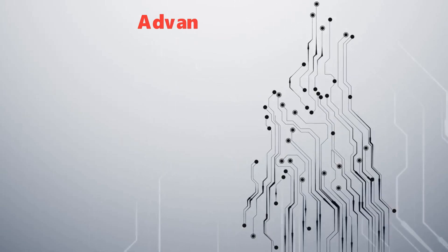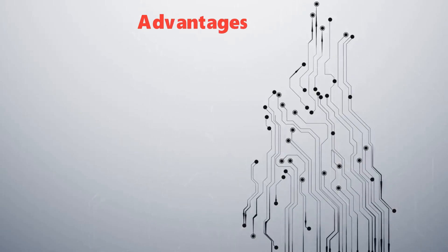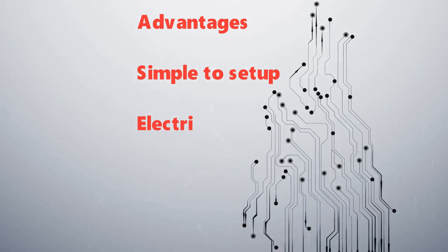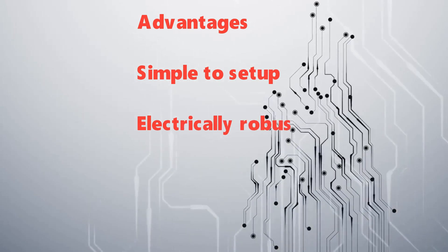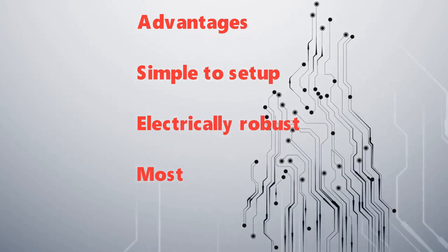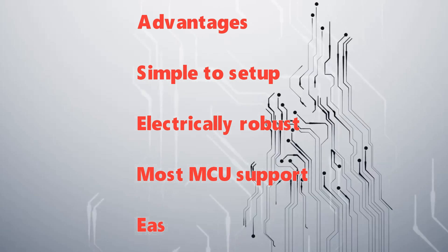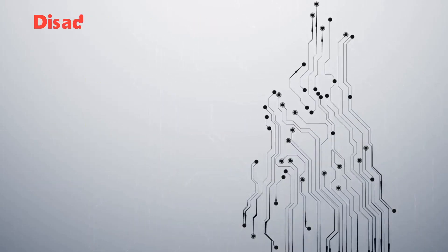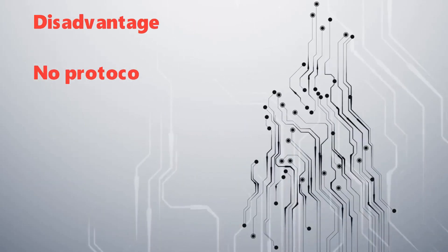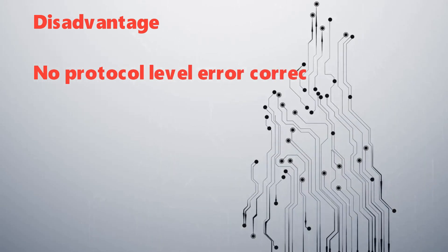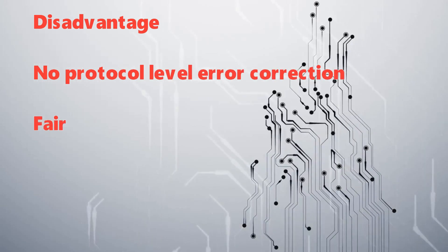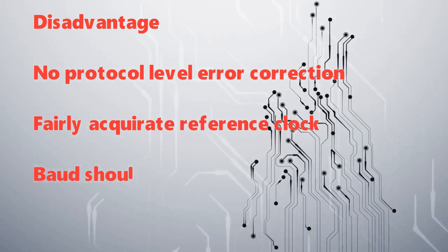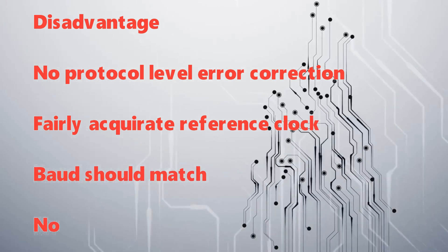Advantages of UART: simple to set up electrically, most MCUs support it, and easy to use. Disadvantages: no protocol-level error correction, requires a fairly accurate reference clock with baud rates matching on both sides, and no support for multiple masters and slaves.